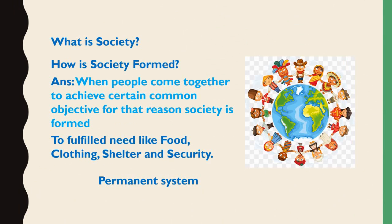Now students, what is society? In the previous chapter you have learned what is society. A society is a group of individual people coming together and sharing their thoughts, ideas, and feelings. Society is formed when people come together to achieve certain common objectives — to fulfill needs like food, clothing, shelter, and security.